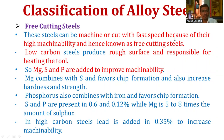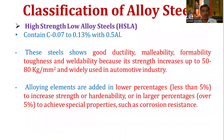Manganese combines with sulfur and favors chip formation, and also increases hardness and strength. Phosphorus also combines with iron and favors chip formation. Sulfur and phosphorus are present at 0.06 to 0.12 percent, while manganese is five to eight times the amount of sulfur. In high carbon steel, lead is added at 0.35 percent to increase machinability.